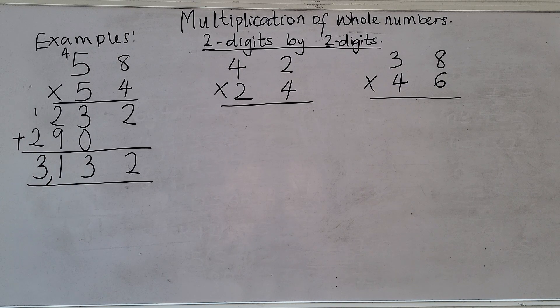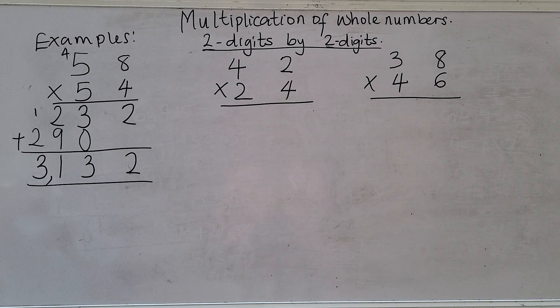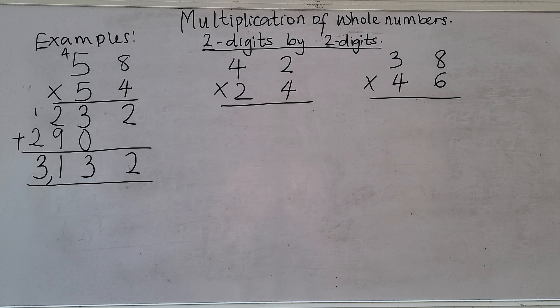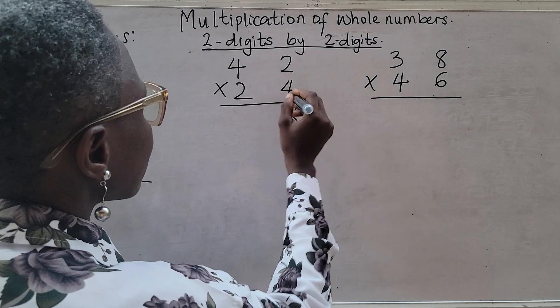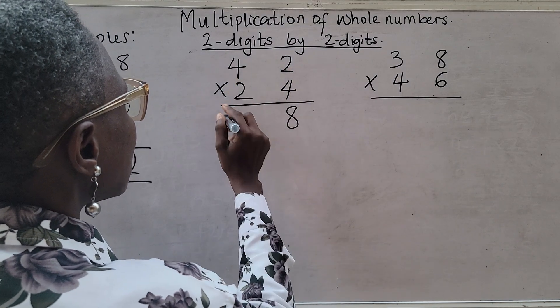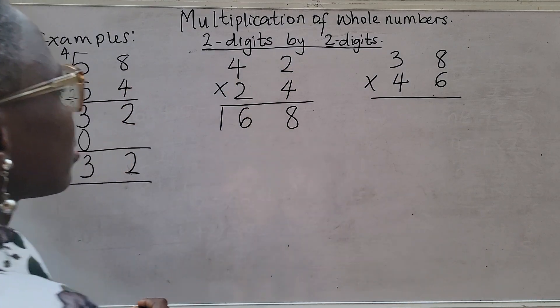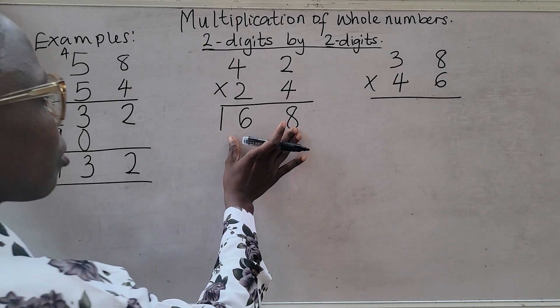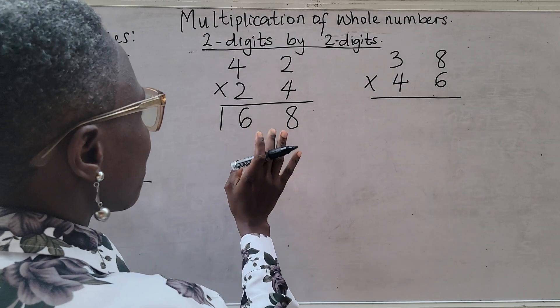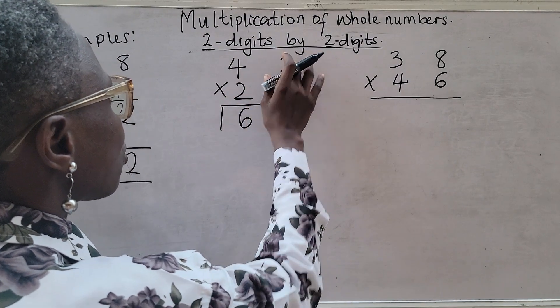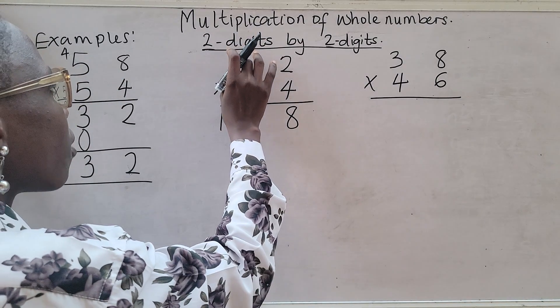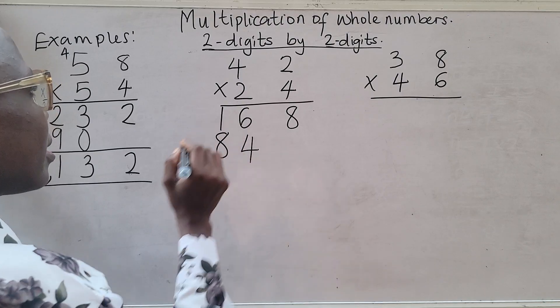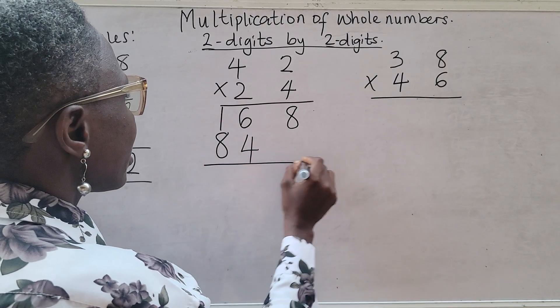I go to the next example. Four times two is eight. Four times four is sixteen. Once you can lay out your numbers this way, there will be no confusion. Two times two, you have four. Two times four, you have eight.